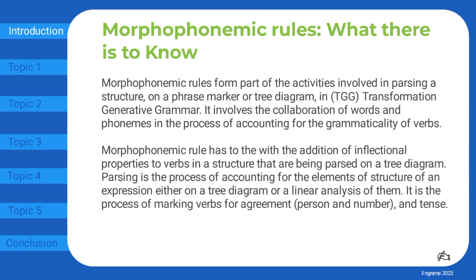It involves the collaboration of words and phonemes in the process of accounting for the grammaticality of verbs. Morphophonemic rules have to do with the addition of inflectional properties to verbs in a structure that are being parsed on a tree diagram. Parsing is the process of accounting for the elements of structure of an expression either on a tree diagram or a linear analysis. It is the process of marking verbs for agreement, person and number, and tense.